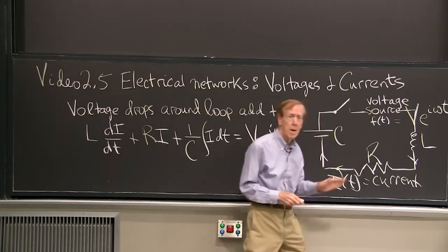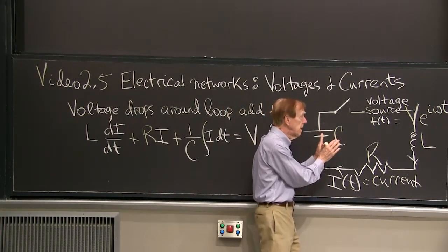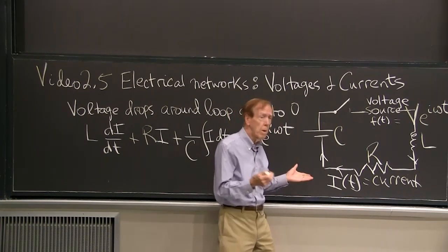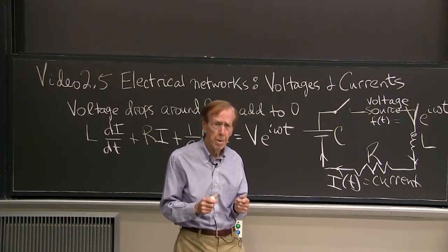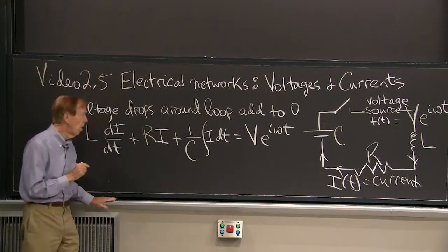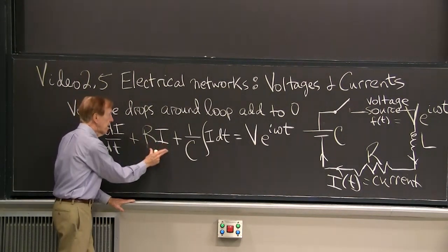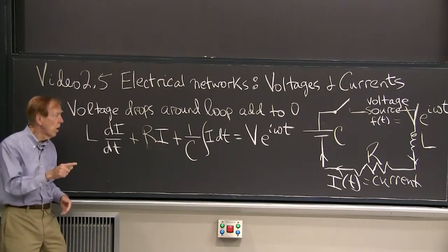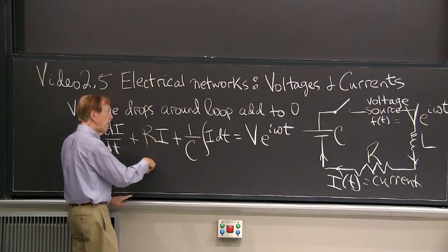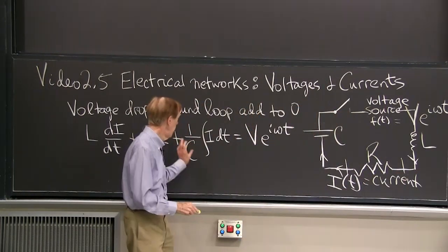Again, this is an RLC loop that everybody has to understand in electrical engineering. So I'm going to have a second order differential equation. Well, you'll see what that equation is. So you'll remember Ohm's law, that the voltage is the current times the resistance. So this gives me a voltage across the resistor. If the current is i and the resistance is R, then the voltage drop from here to here is iR. So that's that term.